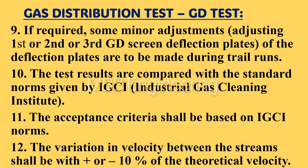Point 9: if required, minor adjustments to the first, second, or third GD screen deflection plates are to be made during trial runs. Point 10: the test results are compared with the standard norms given by IGCI (Industrial Gas Cleaning Institute). Point 11: the acceptance criteria shall be based on IGCI norms. Point 12: the variation in velocity between the streams shall be within plus or minus 10% of the theoretical velocity.